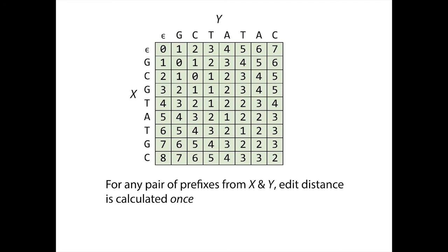This kind of algorithm — where we decompose the overall problem into smaller problems while avoiding redundant recalculation — is called a dynamic programming algorithm. Dynamic programming is a common algorithm design technique, and this dynamic programming paradigm is useful for more than just finding edit distance. It's also useful in other biosequence analysis applications, as we'll discuss in future lectures.